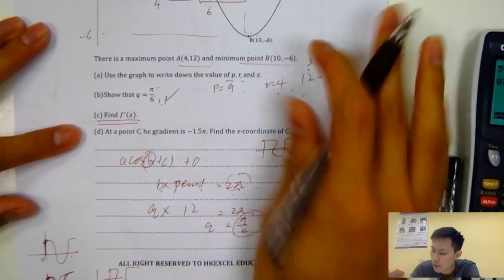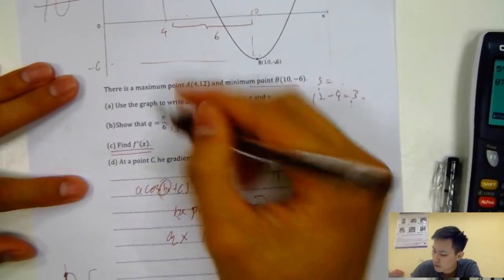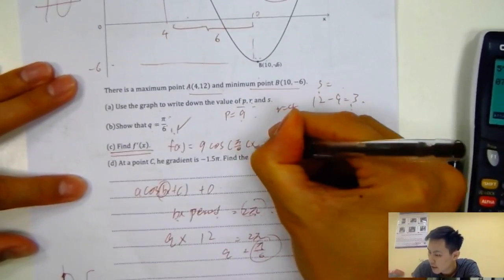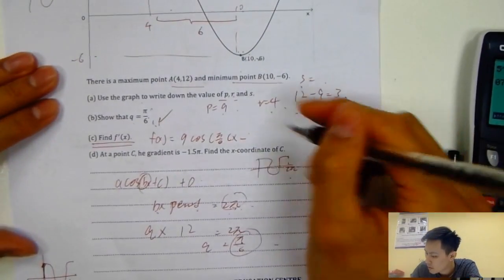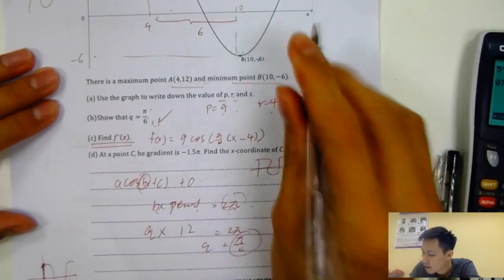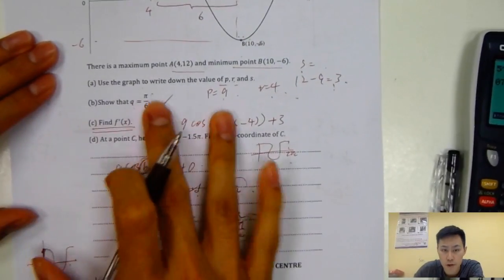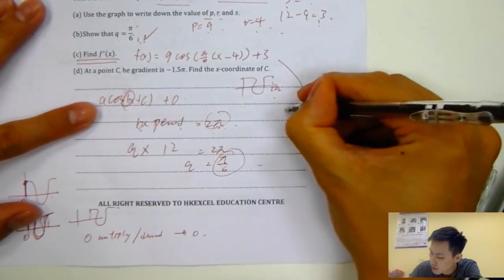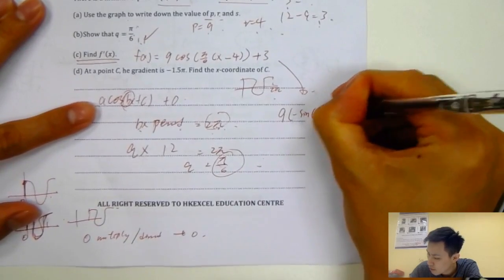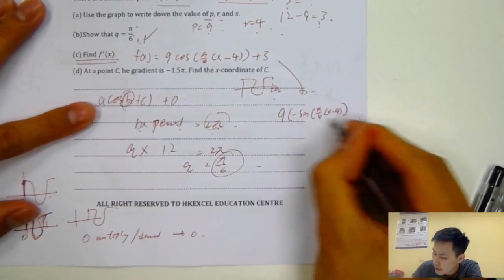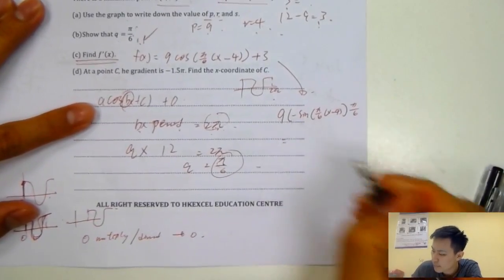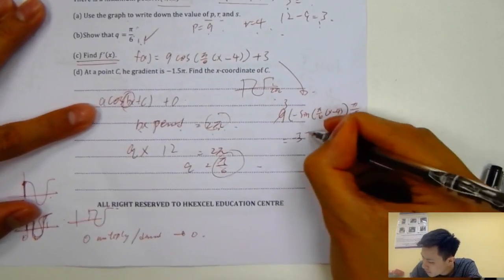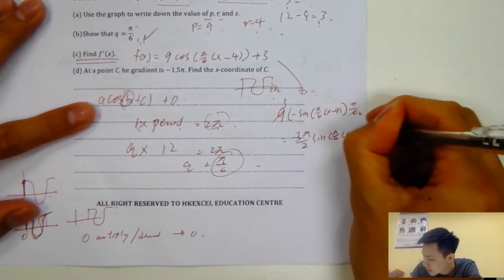This part combines with differentiation. We have f(x) = 9·cos(π/6 · (x minus 4)) + 3. To find f′(x): differentiate cosine to get negative sine, so it's 9 times negative sine, keeping the same bracket, then multiply by the derivative of the inside which is π/6. Simplifying: negative 3π/2 · sine(π/6 · (x minus 4)).